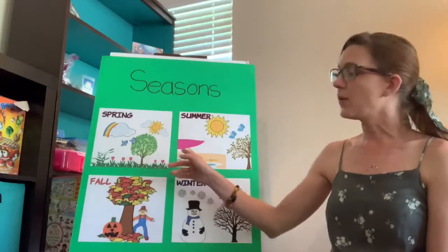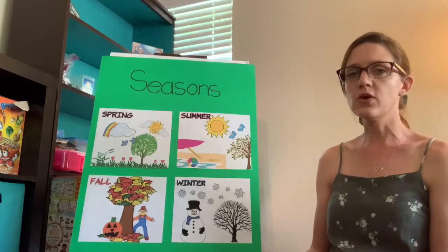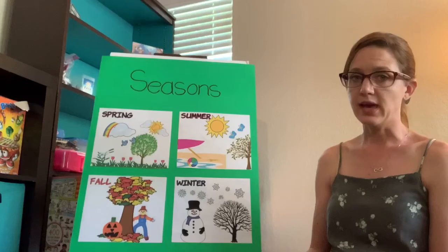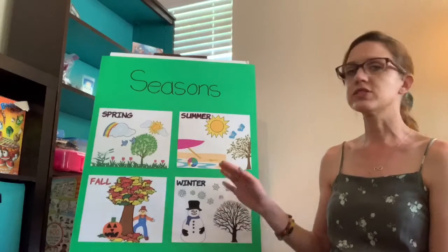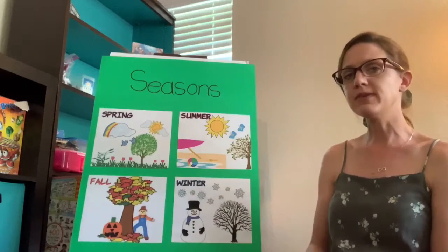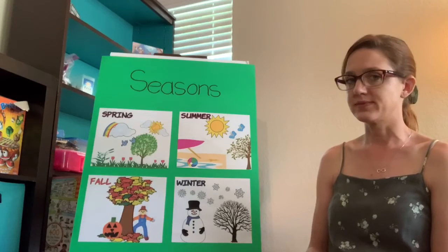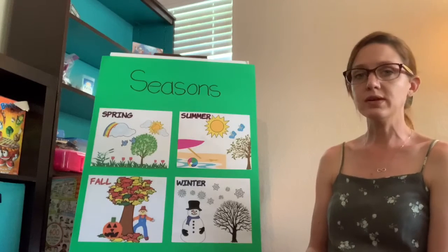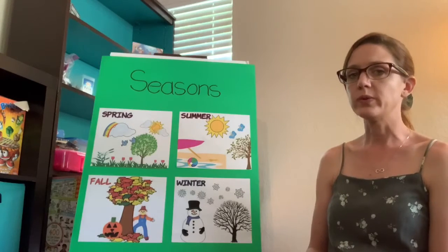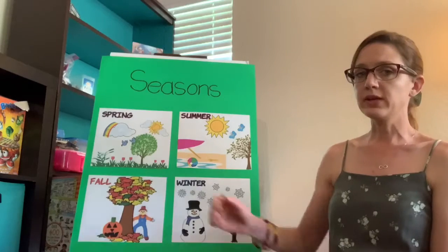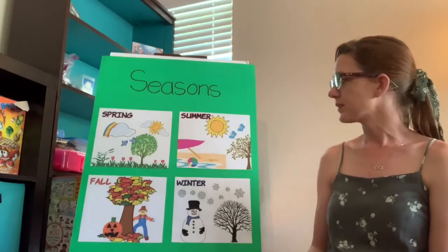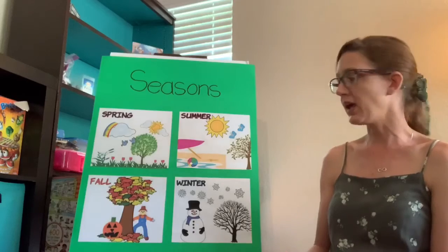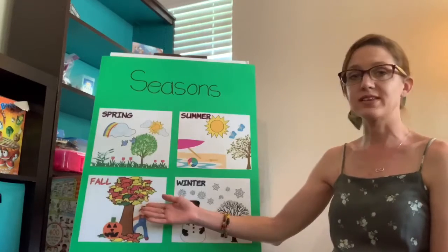Do we know how long each season lasts? There are four seasons and twelve months in a year, so each season is roughly about three months. In the northern hemisphere where we live, spring starts around about March 21st. In the southern hemisphere, they are now starting their fall.